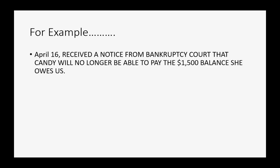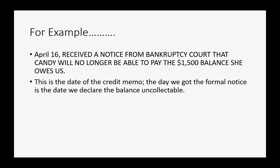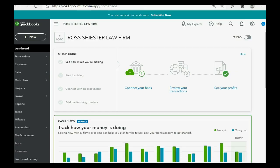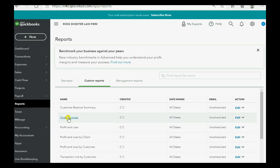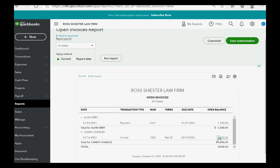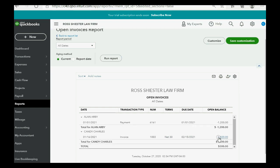For example, let's imagine on April 16 we received a notice from the bankruptcy court that Candy will no longer be able to pay the $1,500 balance that she owes us. This is the date of the credit memo because that's the day we got the formal notice, and that's the date that we declared the balance is uncollectible. Let's click Reports and click Open Invoice — you can see Candy has a $1,500 balance. After making the credit memo, this may disappear to zero if QuickBooks Online automatically applies that credit memo to this invoice. If it does not, then we will have to go and apply it ourselves.